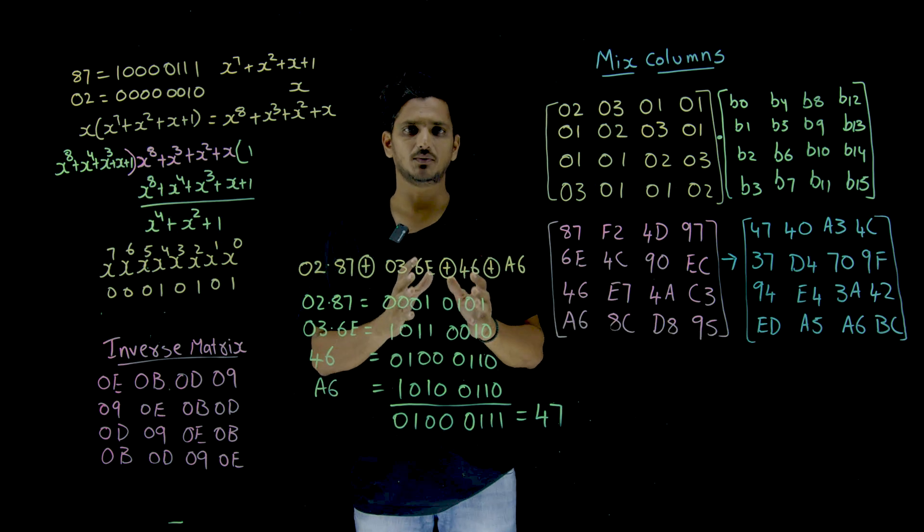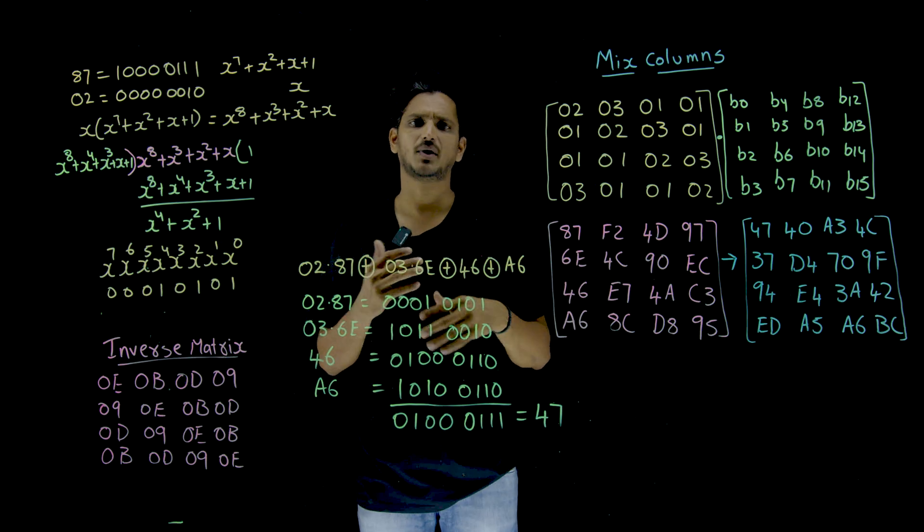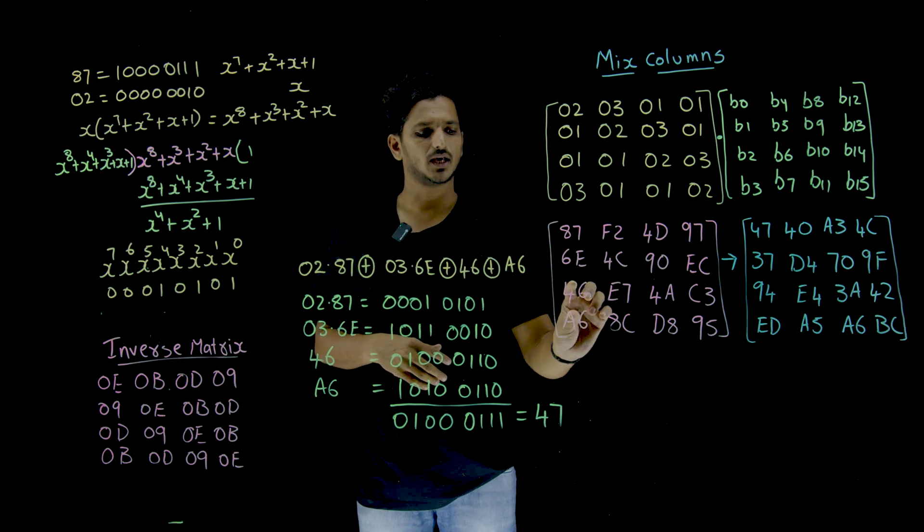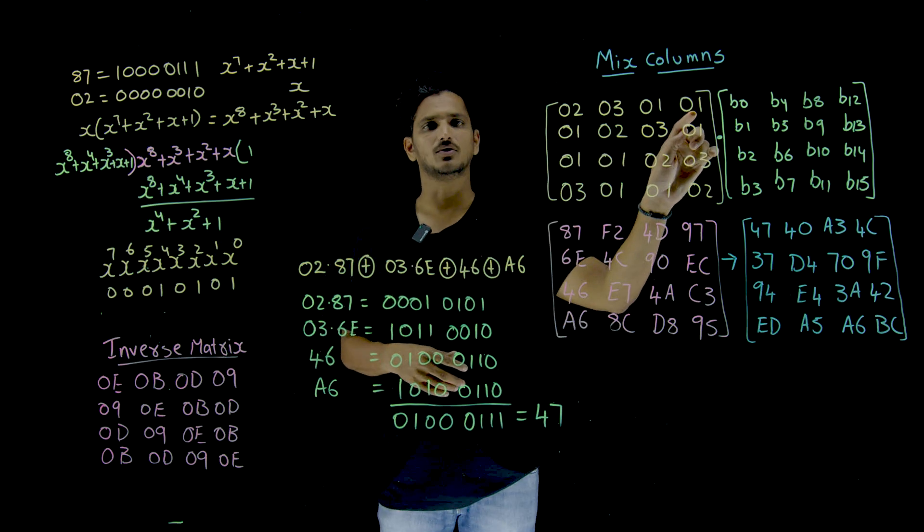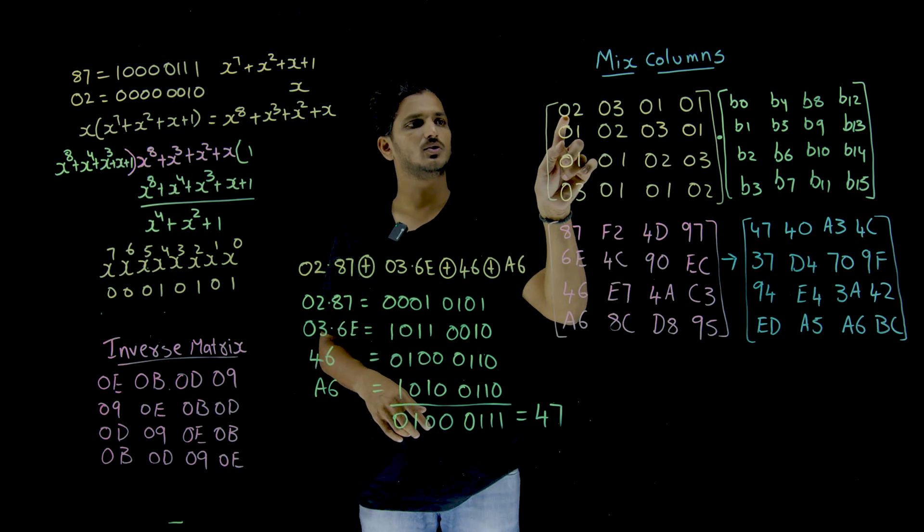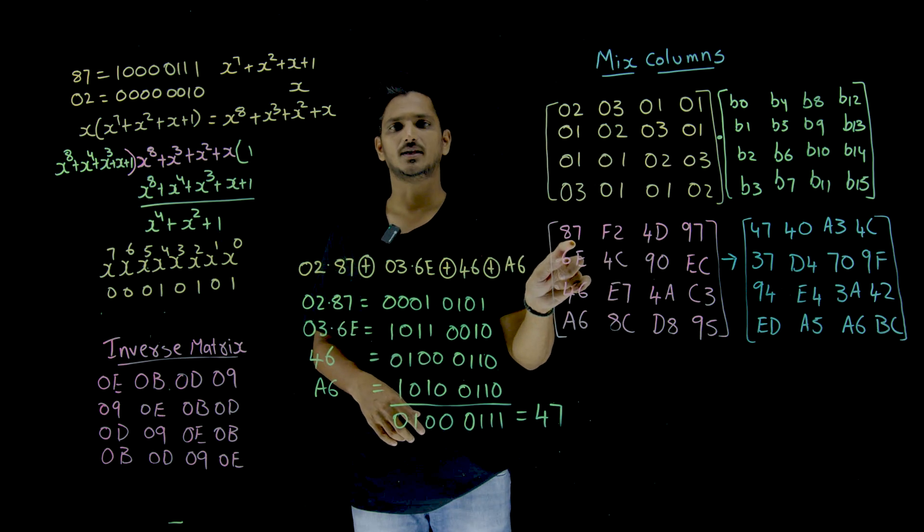Let us understand the multiplication for single, the first one. Take the first column, multiply by this row, means 02 multiplied by 87.